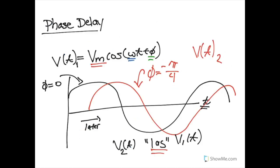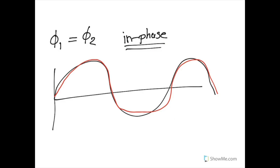In this example here, the red one is after the black one, so it lags. And if two waves have the exact same phase, then they are in phase, and they're completely coincident.